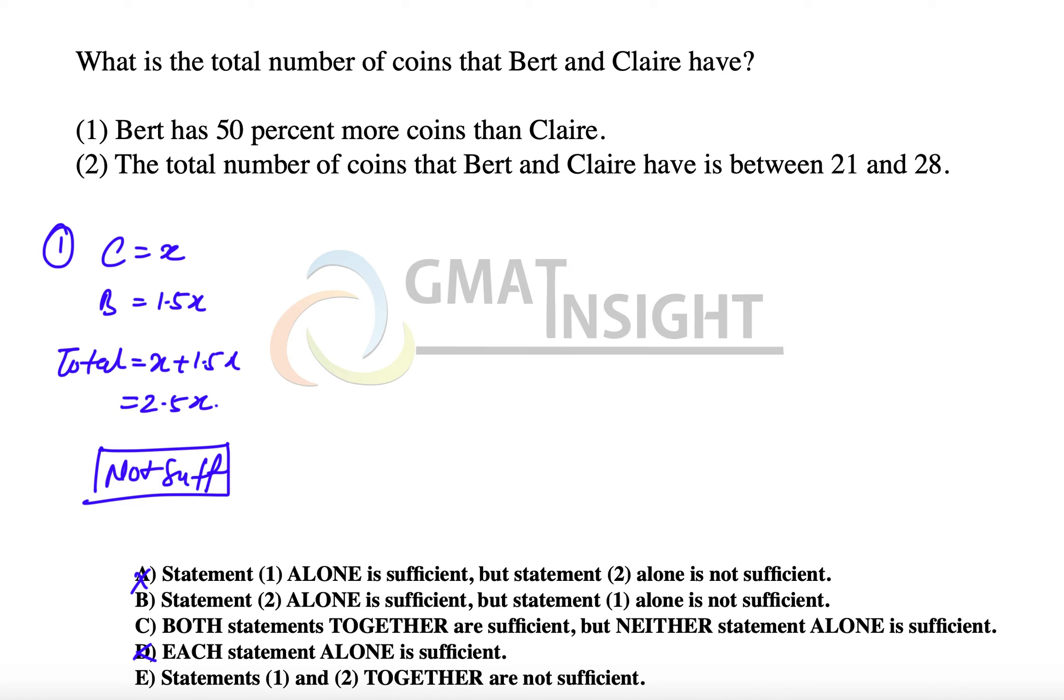Now we look at the second statement. The second statement says that the total number of coins that Bert and Clare have is between 21 and 28.